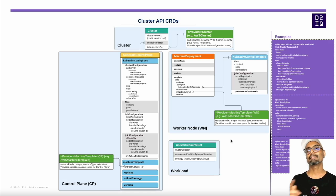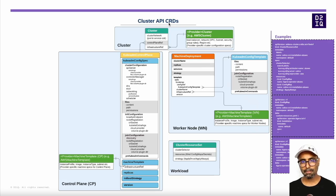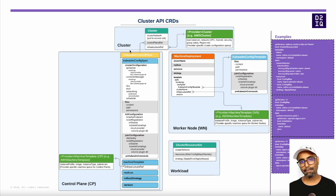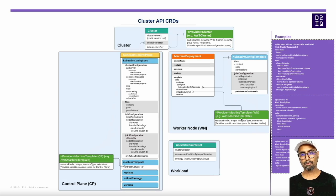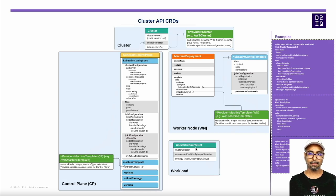So let's recap the different CRDs. To define the cluster infrastructure and configuration, you first define the cluster resource and cluster provider resource to specify the layout of the overall cluster. Then you define the kubeadm control plane and the provider machine template resources to specify the configuration and infrastructure spec of the control plane nodes. Then you define the machine deployment resource, the kubeadm config template resource, and the provider machine template resource to specify the configuration and infrastructure spec of the worker nodes. And optionally, you create the cluster resource set resource along with the corresponding config map and secret containing the manifests for workloads to be deployed once the cluster is up and running.